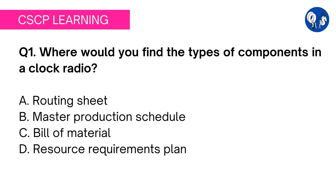Option A says routing sheet. A routing sheet is a document which lists the exact sequence of operations needed to complete the job. Therefore it has nothing to do with the components of a clock radio.